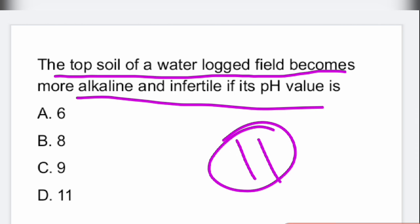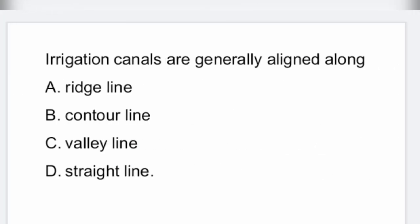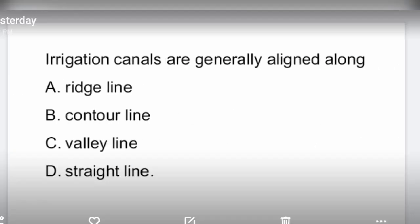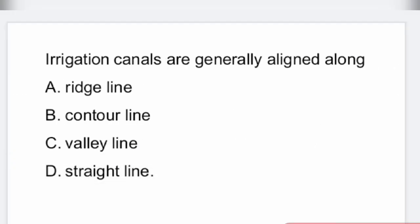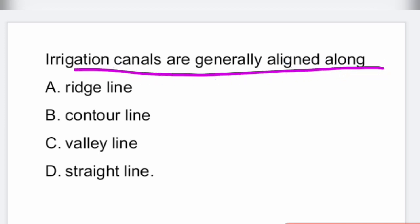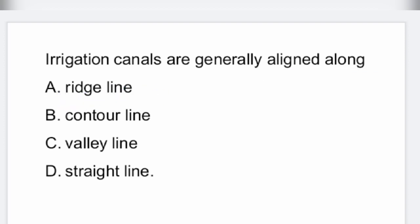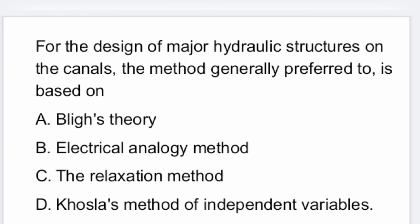If its pH value is 11. Next question: irrigation canals are generally aligned along — they are aligned along the ridge line.